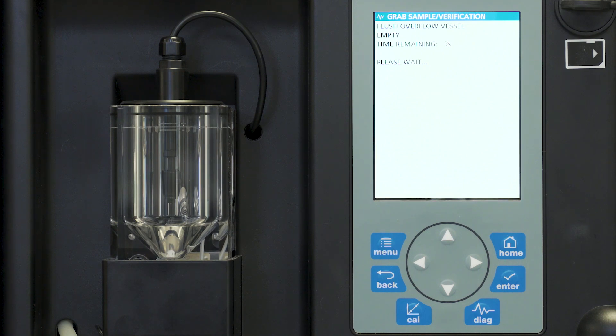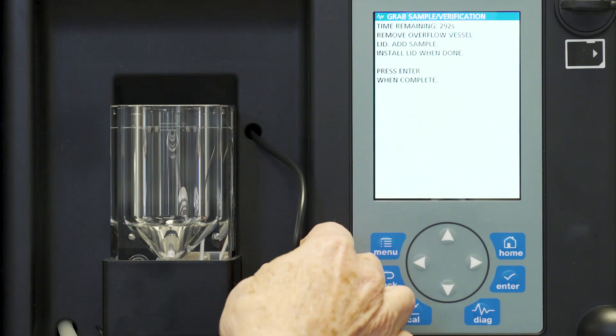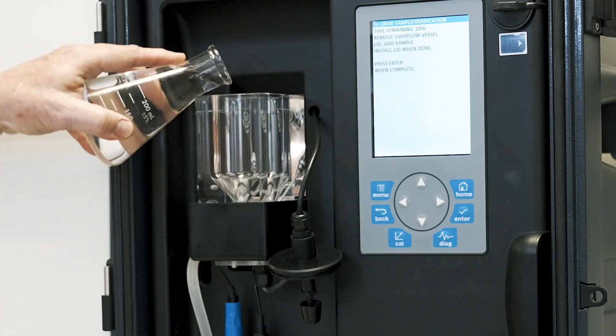You'll notice that we now have finished flushing the overflow cell. So now it's going to give us an opportunity to add the remaining sample we want to measure. We first remove the flow level and we pour in our sample.